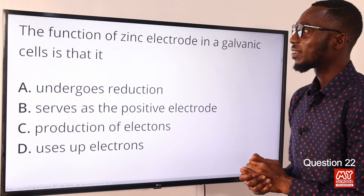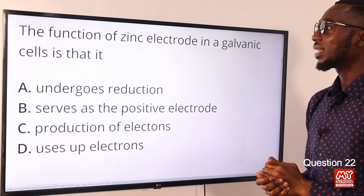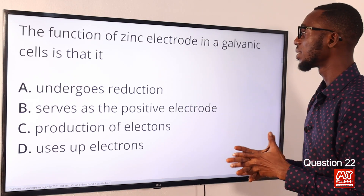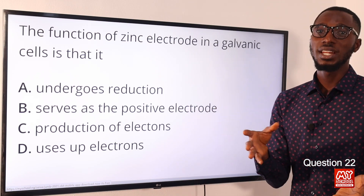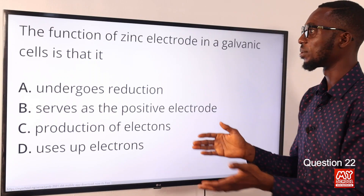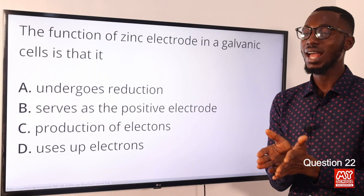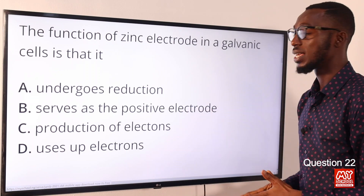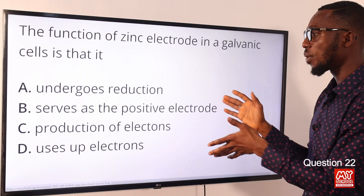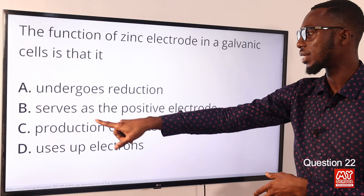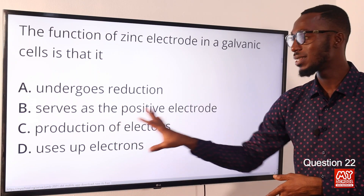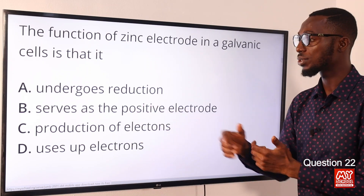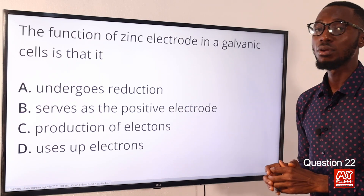Question 22: The function of the zinc electrode in a galvanic cell is what? A galvanic cell (voltaic or electrochemical cell) is a device in which chemical energy is converted to electrical energy. The zinc electrode serves as the negative electrode and supplies excess electrons which flow through to the copper electrode. It is not the positive electrode — it is the negative electrode, responsible for the production and supply of electrons. The correct option is option C: production of electrons.